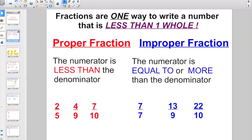So a little bit of review here. Fractions are one way to write a number that's less than one whole. And every fraction we've been working with right now has been what is known as a proper fraction. That's when the numerator is less than the denominator, like 2 fifths or 4 ninths or 7 tenths.